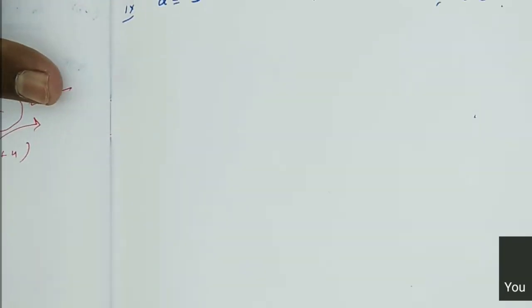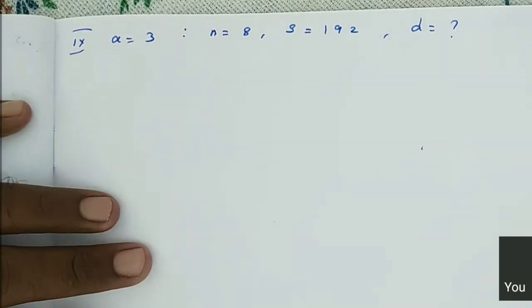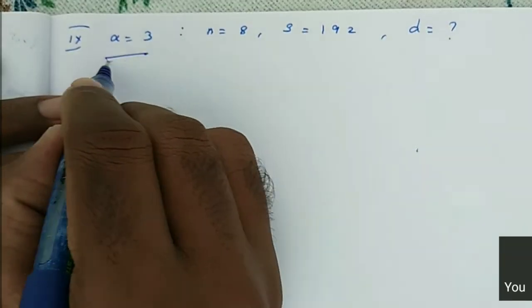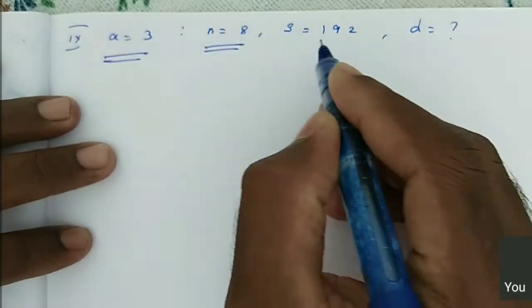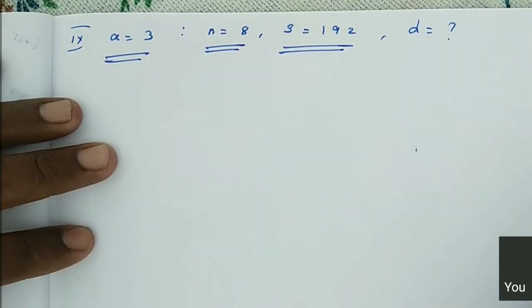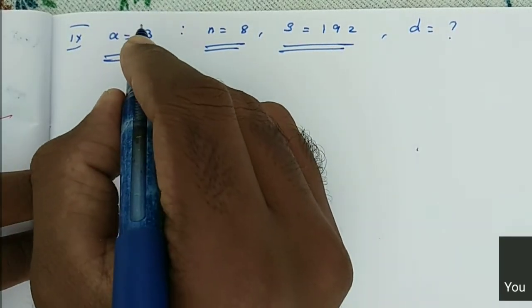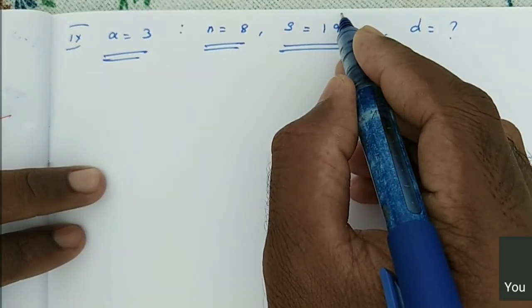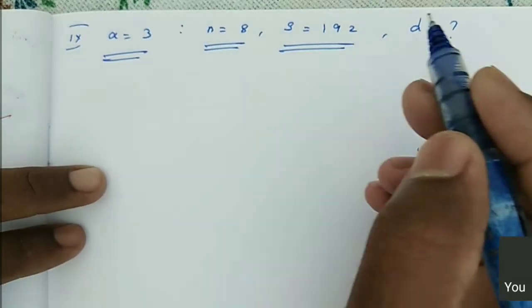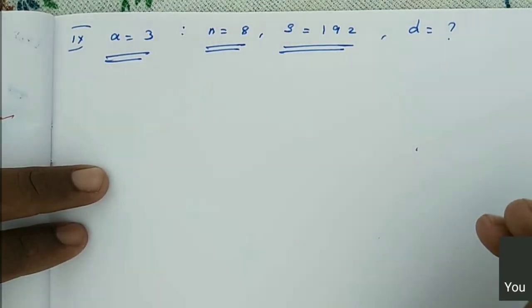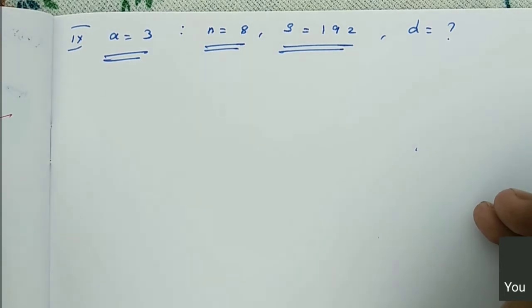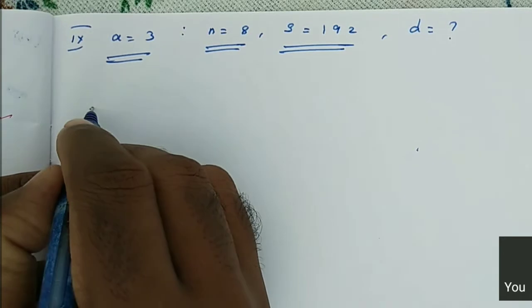Now see here how we will solve this problem. A is equal to 3, N is equal to 8, S is equal to 192. What are we supposed to use? Here we have A value and S value and N value. S_N formula. In the S_N formula, we need A value, D value, and N value. All the things are here, so we can use S_N.